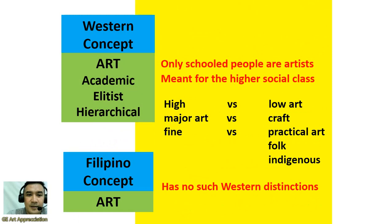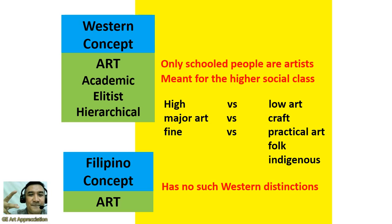On the Western concept of art, we have three categories: academic, elitist, and hierarchical. When we say academic, only schooled people are artists. This was the concept of Western people — if you were studying, you were called an artist. If you were studying in school, you were an artist.